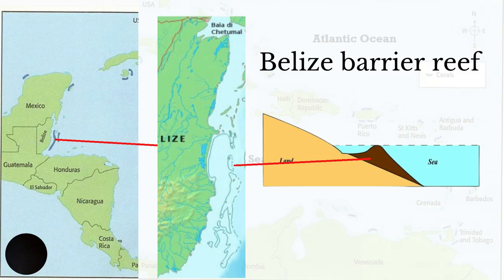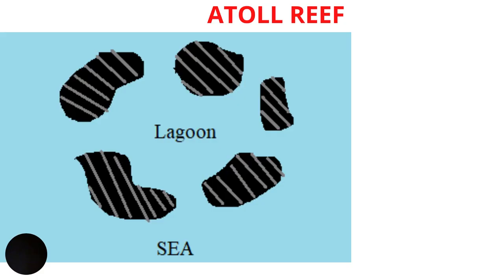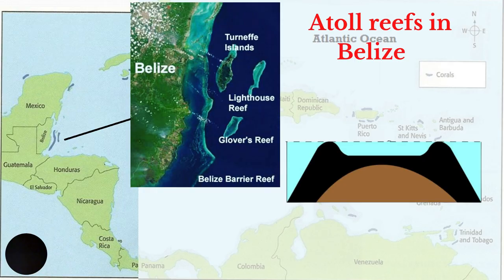A good example of a barrier reef is the Belize Barrier Reef, which is the second largest barrier reef in the world, next to the Great Barrier Reef in Australia. The atoll reef is an isolated ring-shaped reef rising out of deep water and having a lagoon at its center. Notice we have tiny reef islands surrounding a lagoon. Examples of atoll reefs in the Caribbean are the Turneffe Islands, the Lighthouse Reef, and the Glover's Reef.